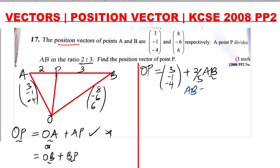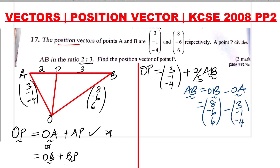What is AB? Since we are given the position vectors of A and B, AB = OB − OA. OB is (8, -6, 6) and OA is (3, -1, -4). Subtracting the corresponding values: 8 − 3 = 5, −6 − (−1) = −5, and 6 − (−4) = 10. So AB = (5, -5, 10).